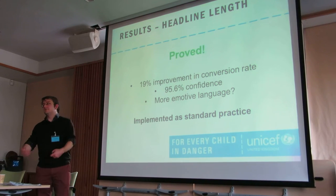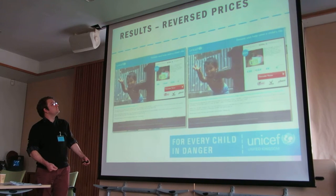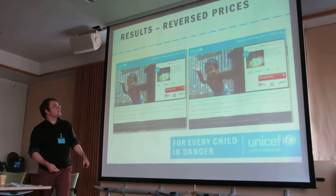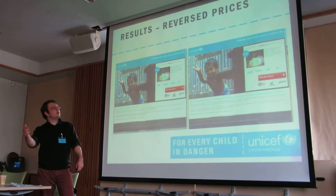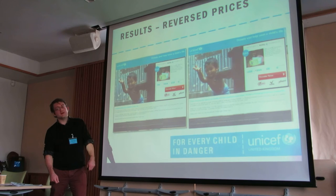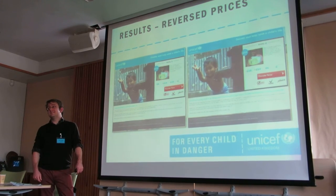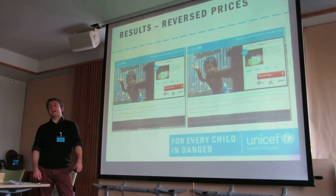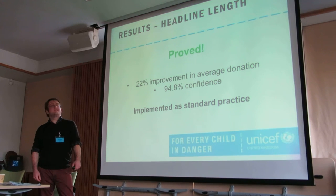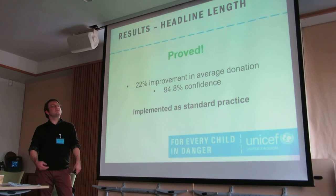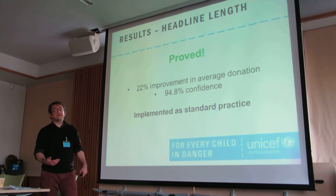But it means we also have to roll it into standard practice whenever we're building that sort of page. A bit of a classic one here: our original goes lowest price point up to highest on the right, and we tried it reversed. This one wasn't measuring conversion rate — it was measuring our average donation. And reversing the prices seems to have done it.